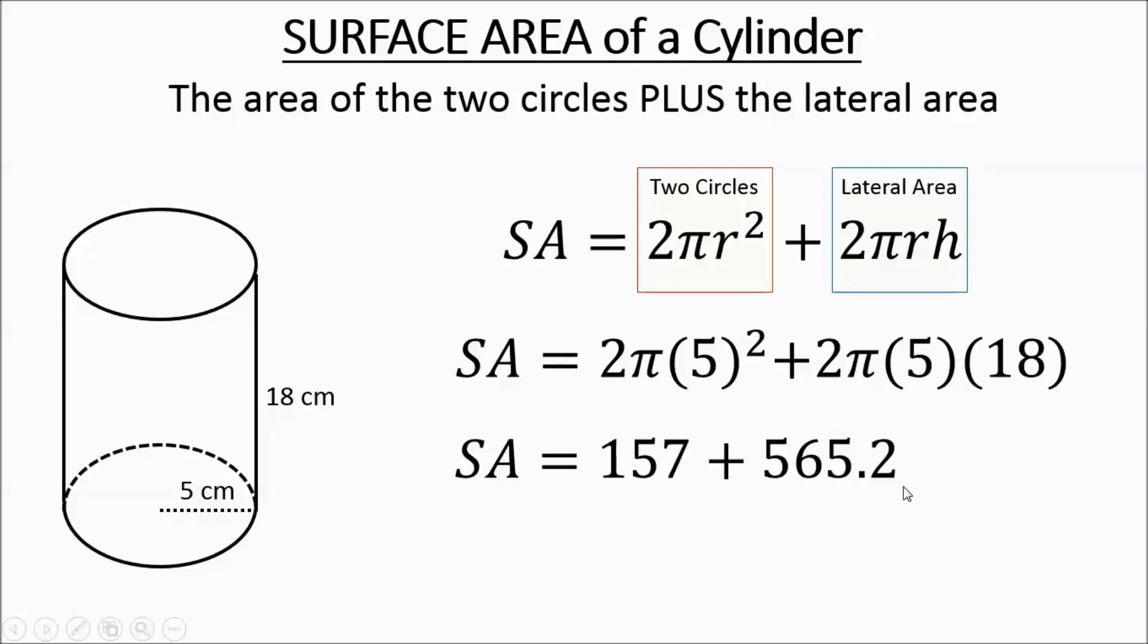You get your answers, then you add them up. Make sure you're writing out your problems as you're working them out. Don't try to do it all on the calculator. You won't get it right. All right, so there's your surface area, 722 and 2 tenths centimeters squared.